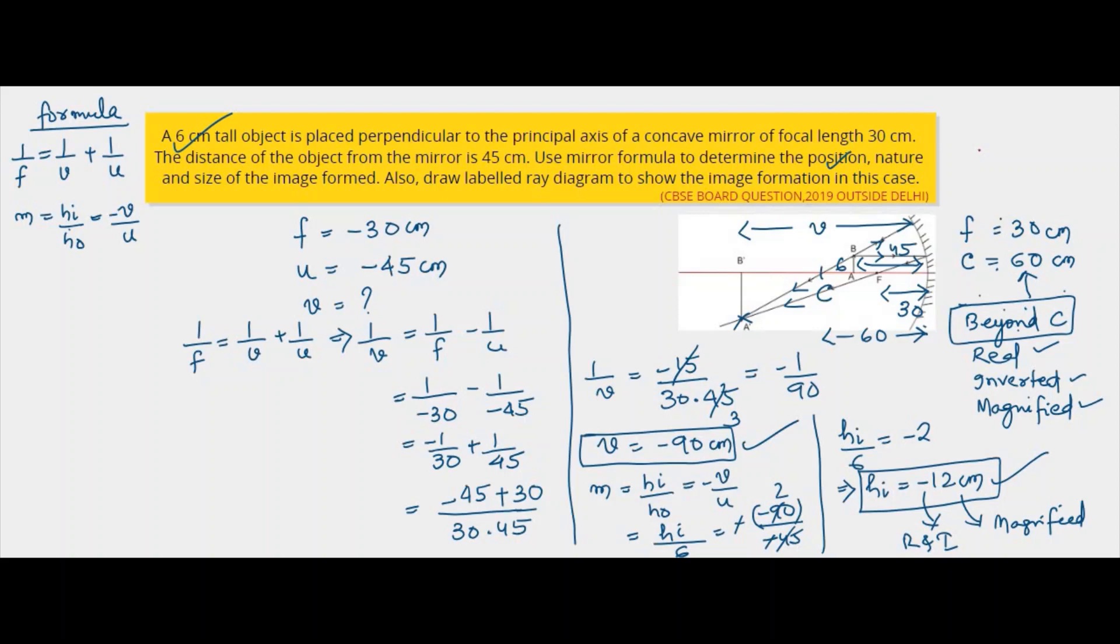So in this way, every time you get a light related question, you can easily correlate it. You can easily tally it with the theory that you have studied. What all conditions you had studied in theory, are all those conditions satisfied in your answer?